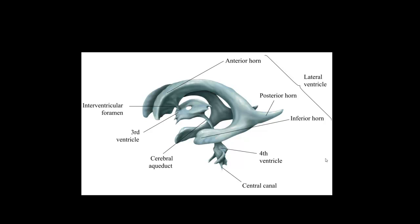Our next objective is the interventricular foramen, or foramen of Monroe, and third ventricle. The lateral ventricle is a big C-shaped structure that flows into the third ventricle via the interventricular foramen, or foramen of Monroe — those terms are synonymous.